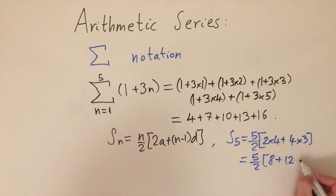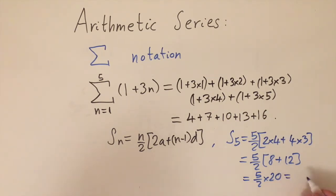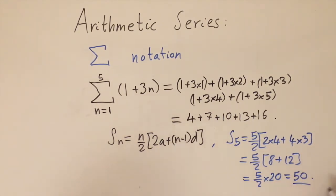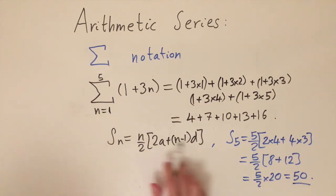Simplifying: 5/2 × (8 + 12) = 5/2 × 20 = 5 × 10 = 50. So the sum of the series is 50 — that's what you get if you add all the numbers together. We can find it very conveniently using this formula, so this is something you should definitely remember.